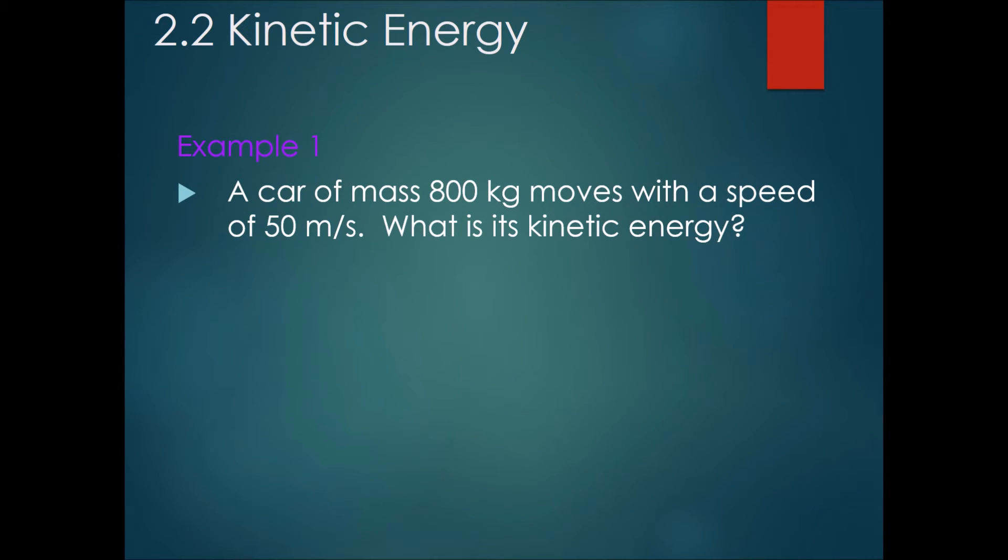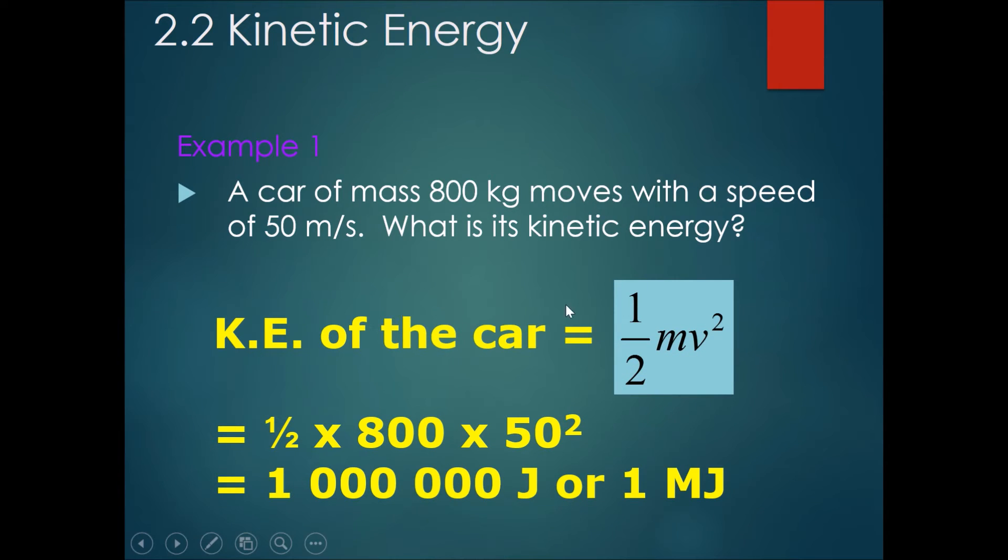Okay, now let's look at the answer. The KE of the car is equal to half mv squared. So substituting into the formula, half times 800 kg times 50 meters per second squared will get you 1 million joules, or you can summarize it as 1 megajoule.